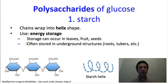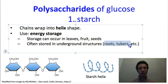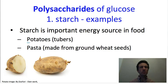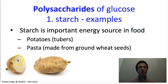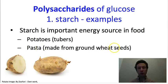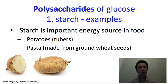We also find starch stored in various underground structures, especially roots and tubers. Potatoes are a kind of tuber and are filled with starch — we'll see that in an upcoming laboratory exercise. A second example is pasta, which is made from wheat seeds that contain a lot of starch. That's why you might eat pasta before an exercise event like a race — eating a big meal of pasta the night before gives you all that starch energy that you can make accessible the next day.